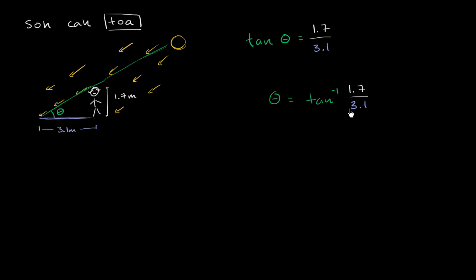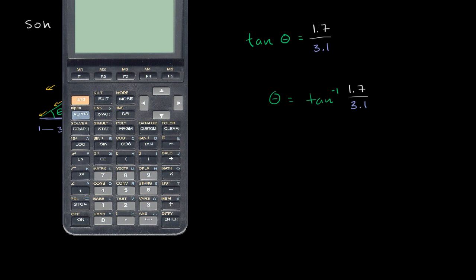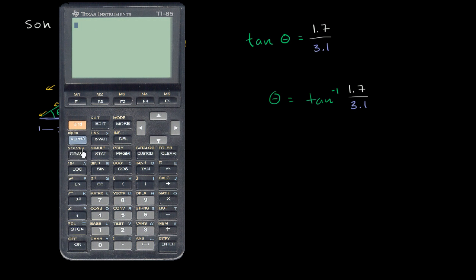And this isn't something that's very easy to look at the unit circle and try to figure out. So let's just use our calculator for this one. We want to take the inverse tangent. So give me the angle whose tangent is the argument that I'm going to give to this inverse tangent function. The inverse tangent of 1.7 over 3.1.